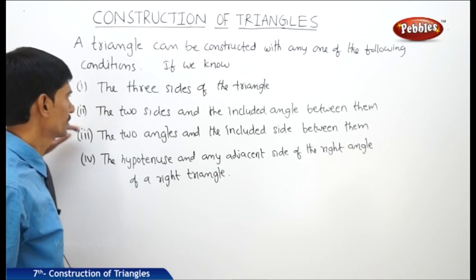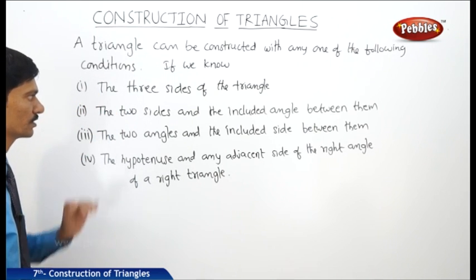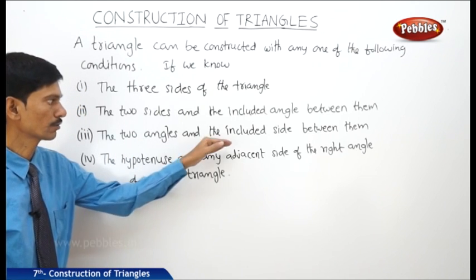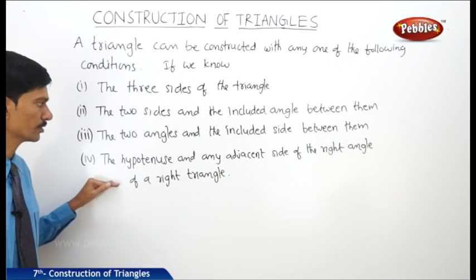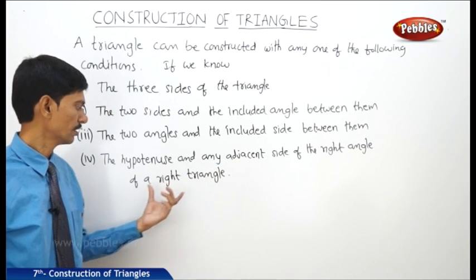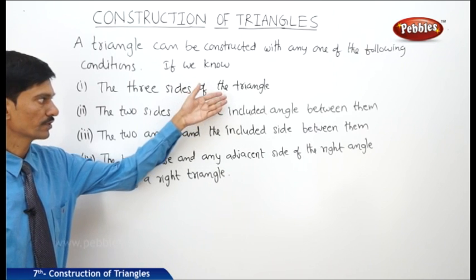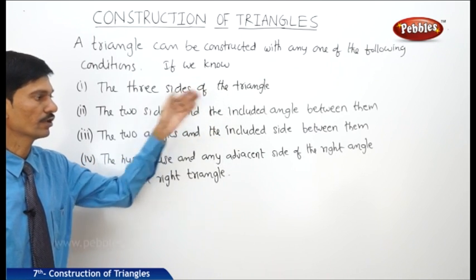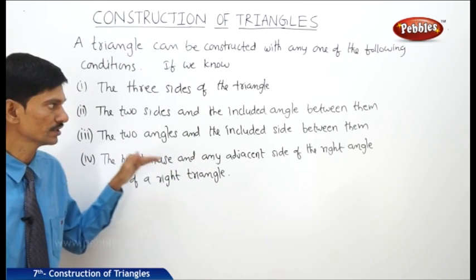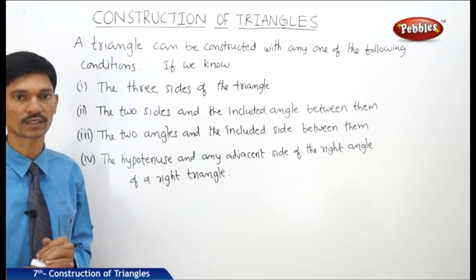So, if you know either the three sides, or the two sides and the included angle, or the two angles and the included side, or the hypotenuse and any adjacent side of a right triangle — with any one of these conditions, we can construct a triangle. Now let us discuss each condition of the construction of the triangle.